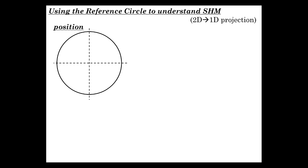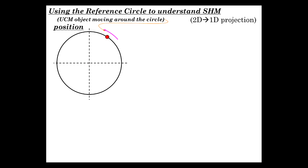The reference circle involves considering uniform circular motion — two-dimensional motion — with a flashlight above shining down and projecting the shadow of the object onto the x-axis. That's a two-dimensional to one-dimensional projection. When we make that projection, the shadow going back and forth is simple harmonic motion. The radius of the circle is also the amplitude A — the distance from the equilibrium position to the outer edge.